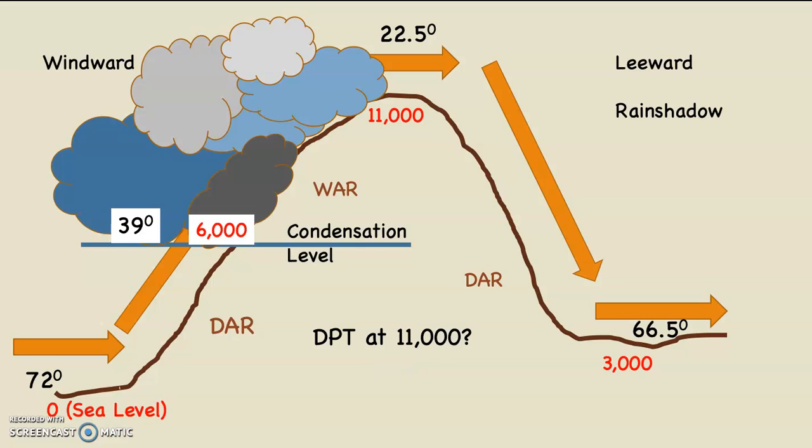What's the dew point temperature at 11,000 feet? It's going to get easier now. There's a cloud at 11,000 feet, which means it's 100% relative humidity, which means the air is saturated. Those things mean that the air temperature and the dew point temperature must be the same number, and that number is 22.5 degrees.